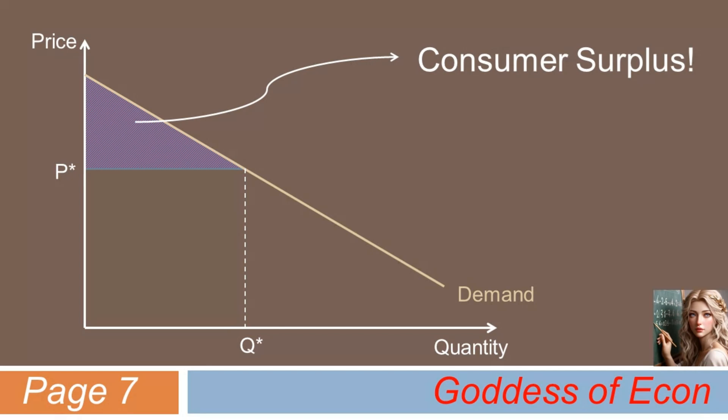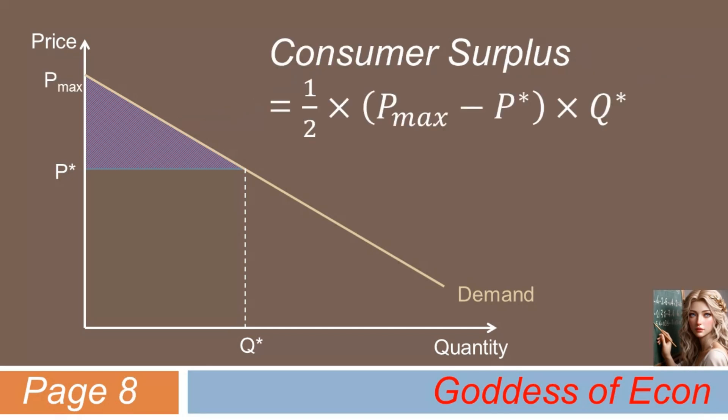Under the assumption of a continuous linear demand curve, calculating the amount of consumer surplus is a piece of cake. Why? Because all you need to do is to simply calculate the area of that triangle. One-half times height times base is the formula for the area of a triangle, isn't it? So when the market price is at P star, and the quantity demanded is Q star, the consumer surplus can be calculated as one-half times P max minus P star times Q star. Here, P max is simply the value of the y-intercept. That is, the price level corresponding to zero quantity demanded.